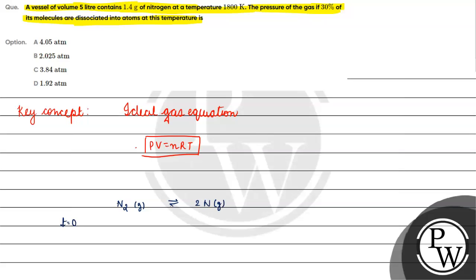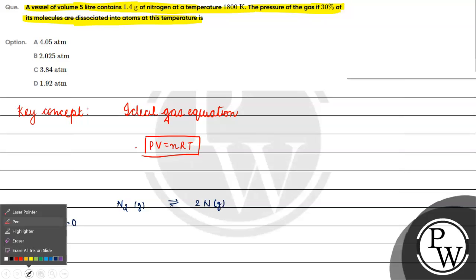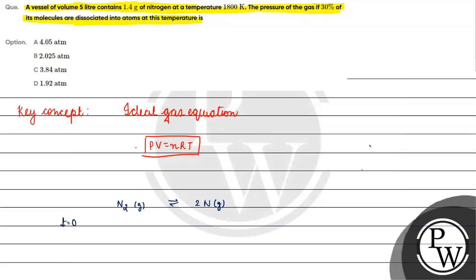First, we calculate the number of moles of nitrogen gas. The number of moles equals mass divided by molar mass. Mass is 1.4 grams, and the molecular mass of nitrogen gas (N₂) is 14 × 2 = 28 grams per mole.